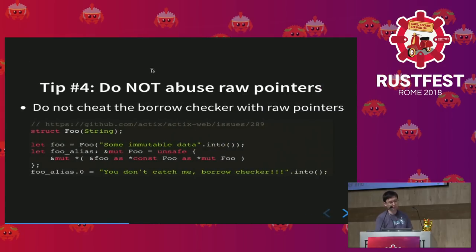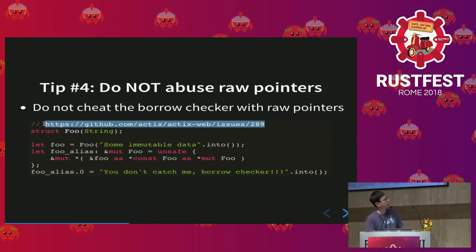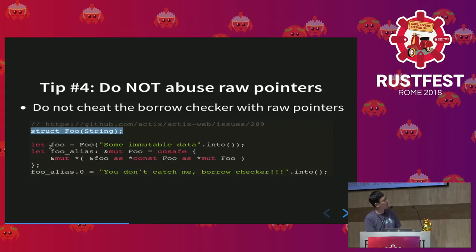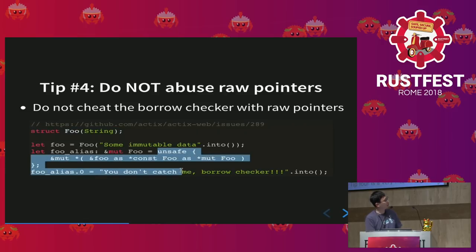Tip four is a very interesting case from Actix Web issue 289. Someone complained that bad patterns were used — for example, declaring an immutable variable, then using unsafe to cast a reference to a *const pointer, casting it again to a *mut pointer, and dereferencing it to get a mutable reference. The borrow checker won't complain a single word about it, but this is definitely a bad pattern, so don't do it. There is Cell and RefCell to help you do interior mutability — use those instead.